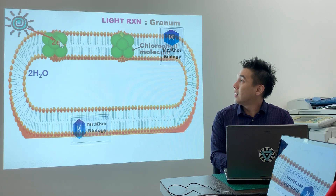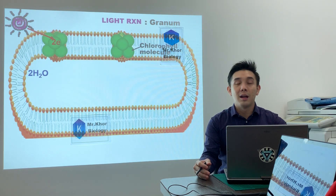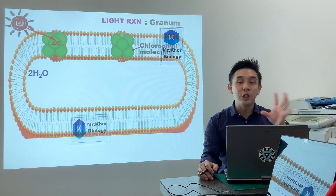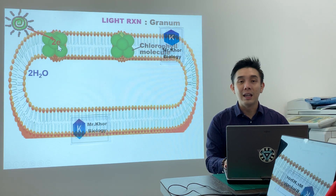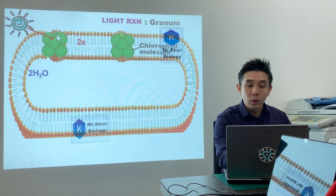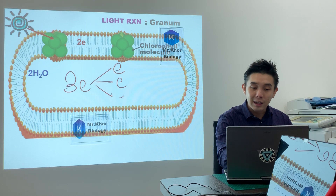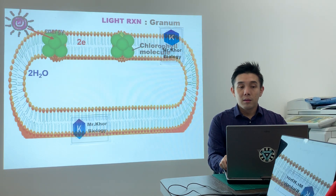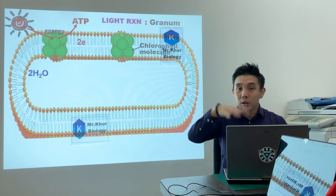When sunlight is absorbed, electrons become excited. 'Excited' doesn't mean happy — it means they have high vibrational energy. Because electrons become excited, they escape. I teach students to remember this as the '3E' technique: Electron, Excited, Escape. The energy absorbed is also used to form ATP.